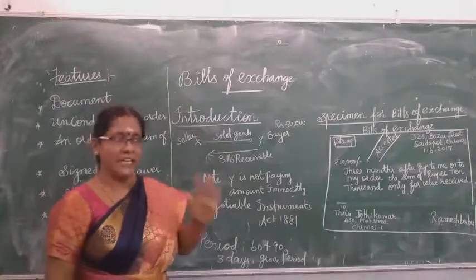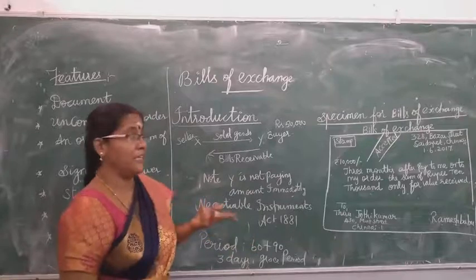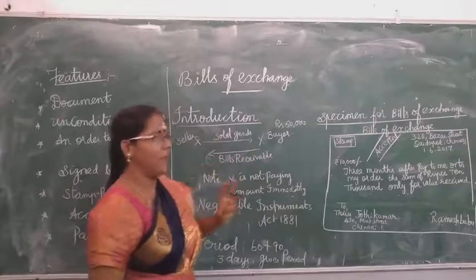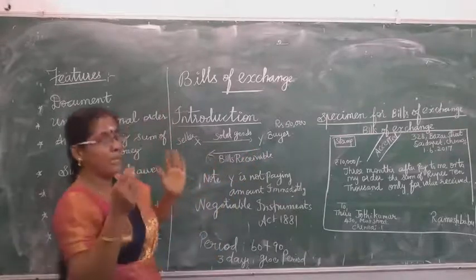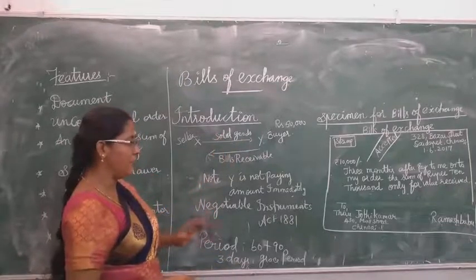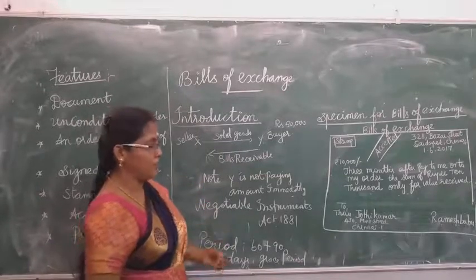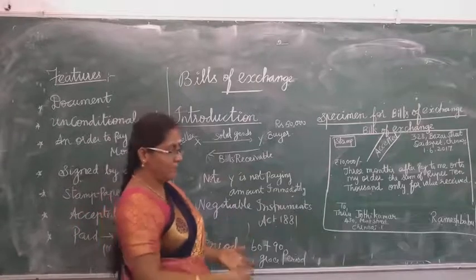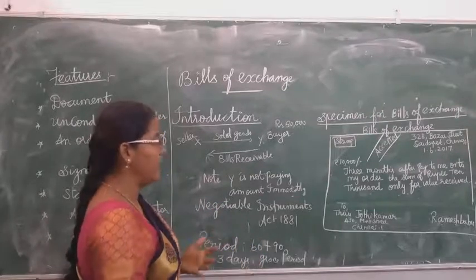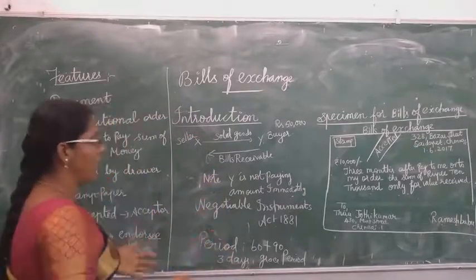For that, we need evidence. So X will write the bill of exchange and hand it over to Y. Y is not paying the amount immediately, so after 2 or 3 months they must pay. X will write on a stamp paper — that is called a bill of exchange.